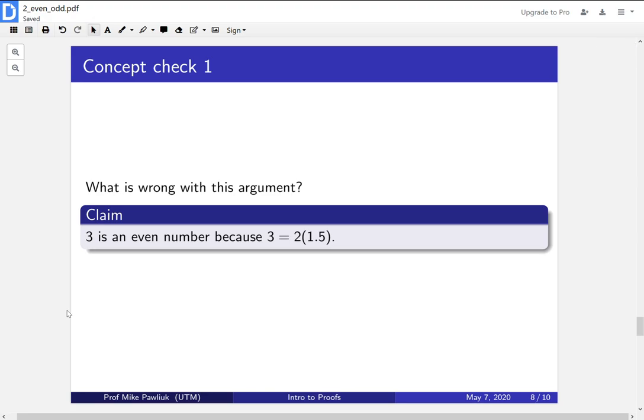Let's look at some concept checks. These are things students often get wrong. I see mistakes like this on tests. So what's wrong with this argument: 3 is an even number because 3 equals 2 times 1.5. Well, the error here is that even though 3 is 2 times something, you need that something to be an integer, and 1.5 is not an integer.